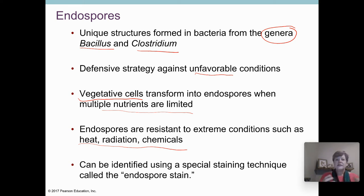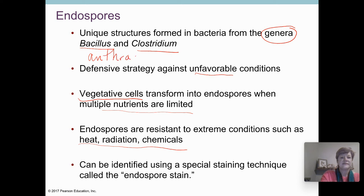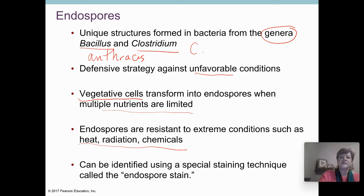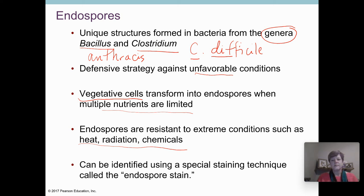Endospores are not reproductive structures — it's a protective concept, not a reproductive one. The diseases you may know that form endospores: Bacillus anthracis causes anthrax and forms endospores, making it very dangerous because it's a pathogen and very hard to kill. Clostridium — you've probably heard of Clostridium difficile, or C. diff — can also cause disease.